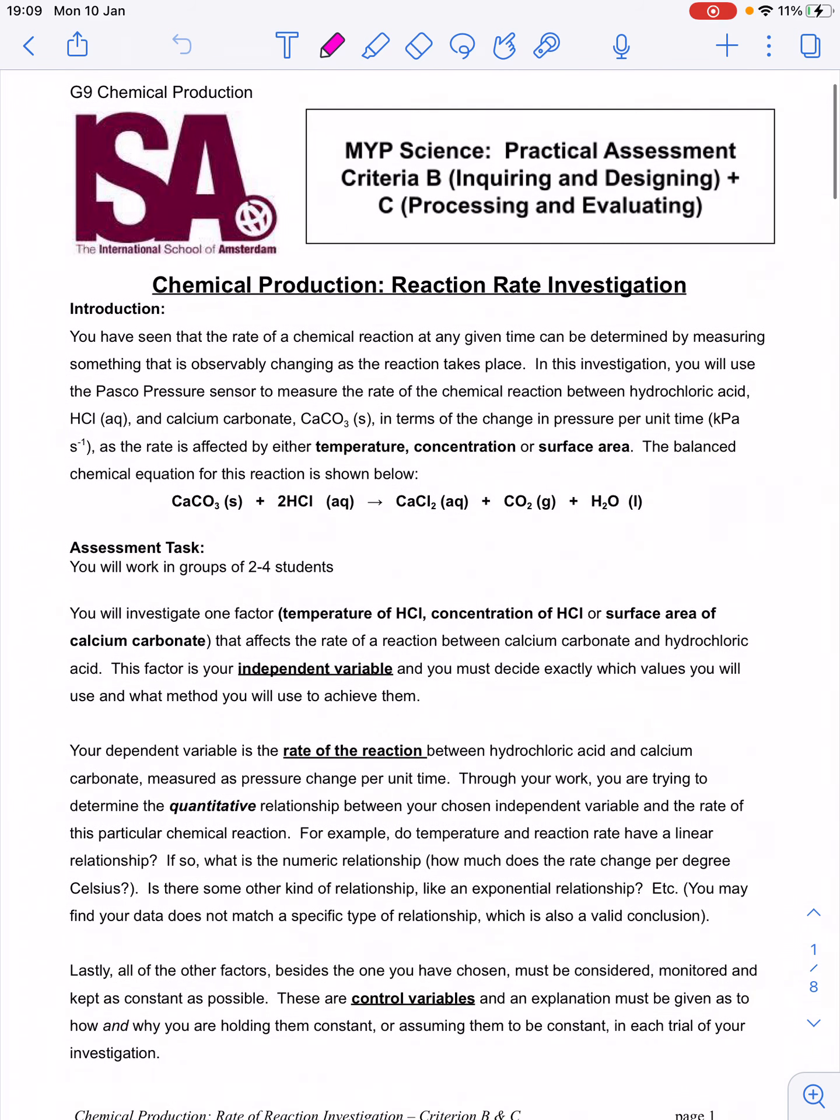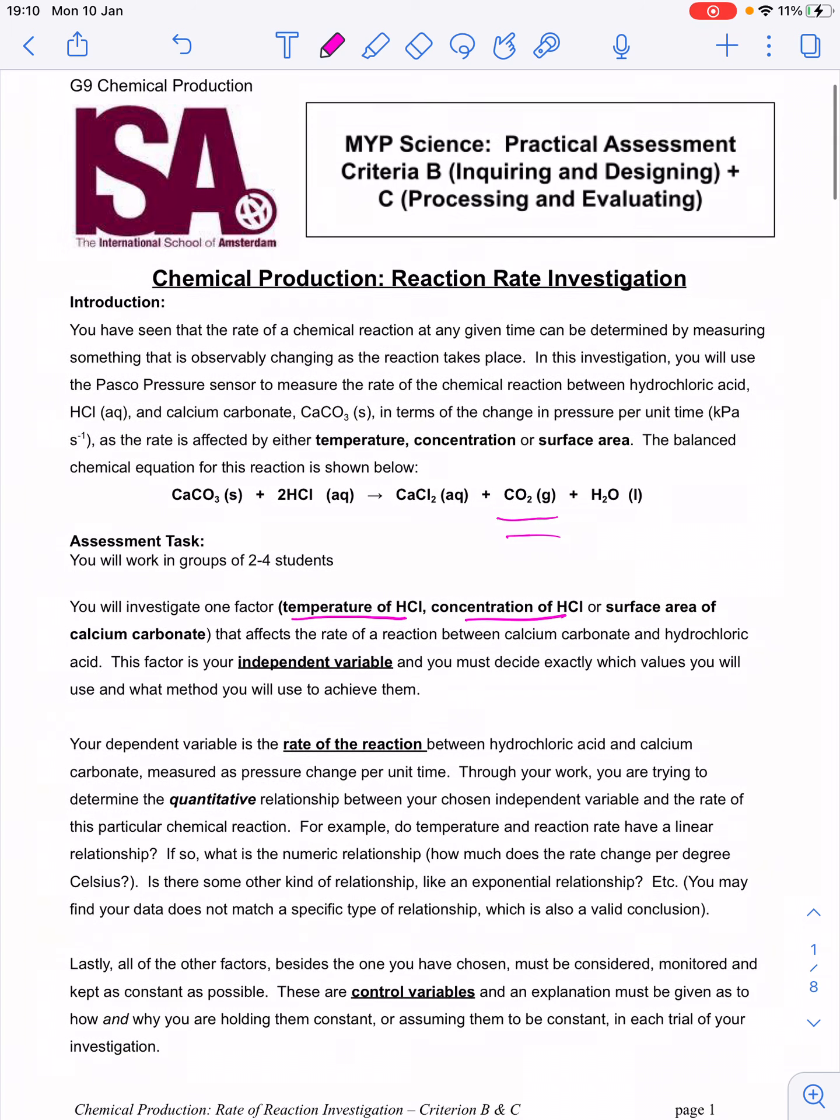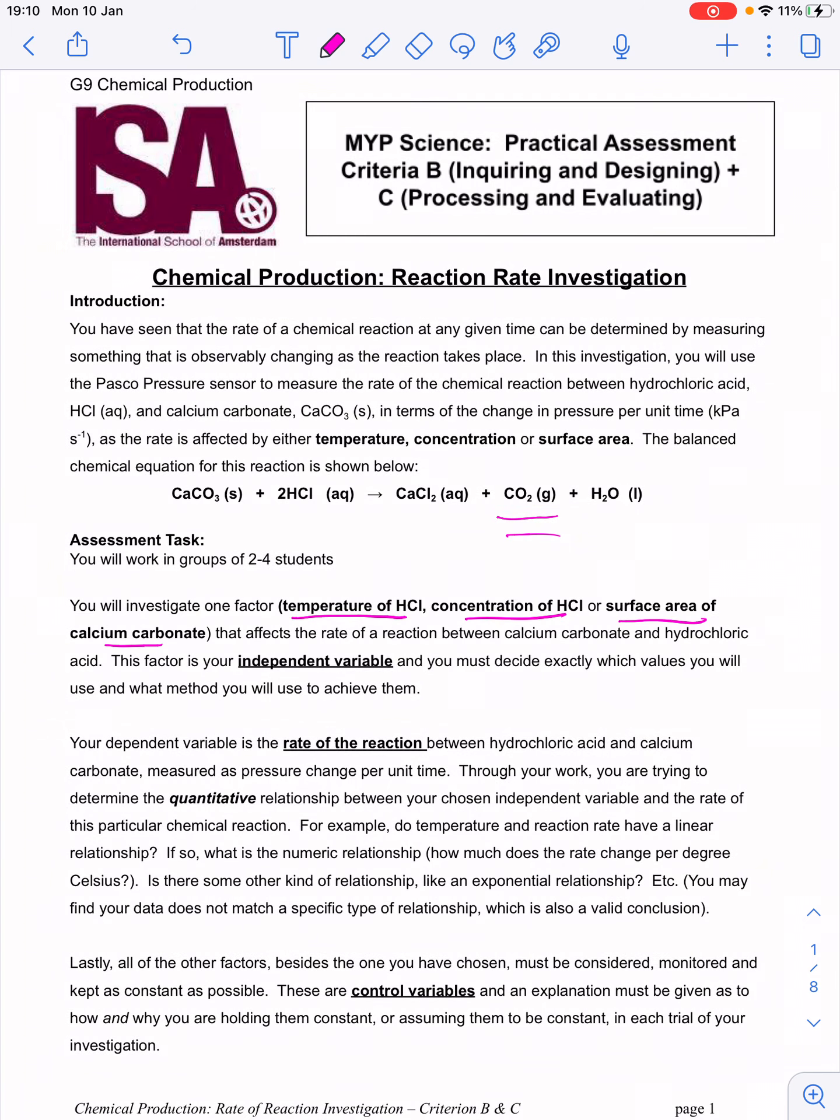The reaction we're looking at is calcium carbonate reacting with hydrochloric acid. The main product that we're concerned with is the production of carbon dioxide gas, and you're going to be capturing that gas in a flask and using a pressure probe to measure the pressure change over time. Your group should have one of the variables. Either you're changing the temperature of the hydrochloric acid, the concentration of the hydrochloric acid, or the surface area of the calcium carbonate.